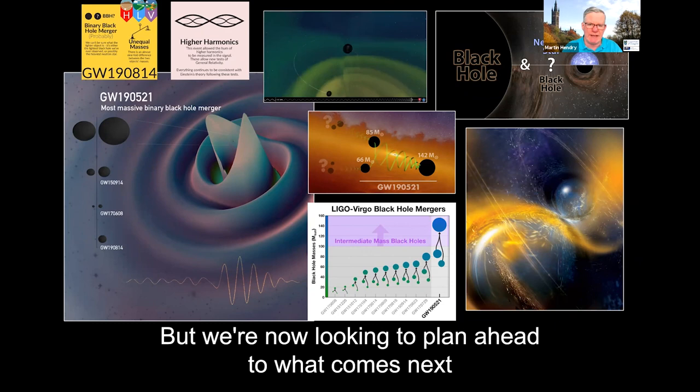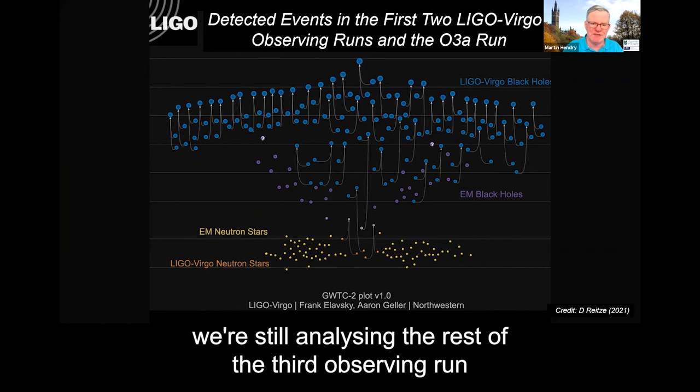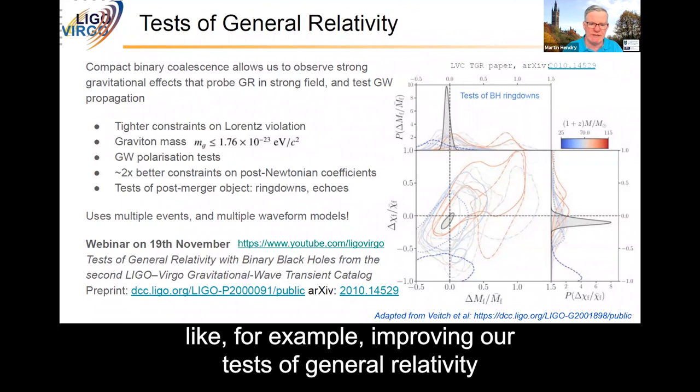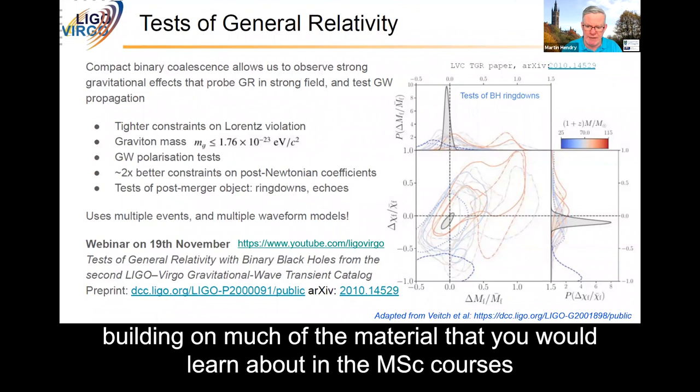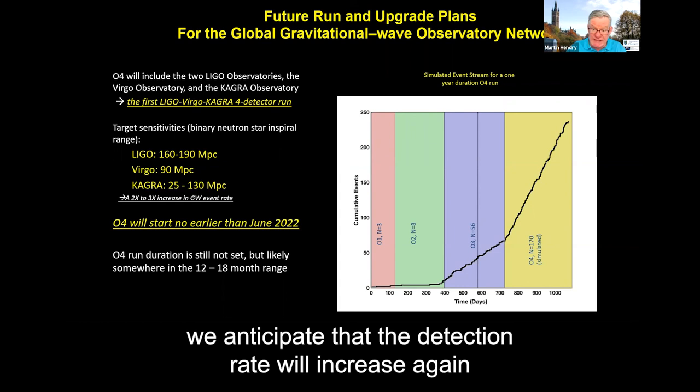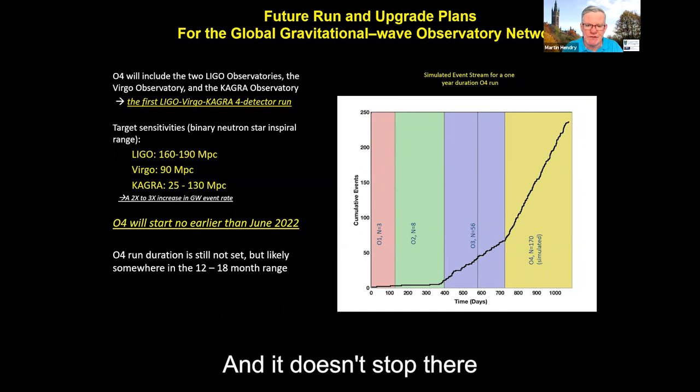But we're now looking to plan ahead to what comes next. We've got our catalog, our updated catalog of 50 gravitational wave events that we've confirmed so far. We're still analyzing the rest of the third observing run, while still learning all that we possibly can from the ones we've published so far, like, for example, improving our tests of general relativity, and holding on much of the material that you would learn about in the MSC courses. And in 2022, when our fourth observing run begins, we anticipate that the detection rate will increase again, because we're upgrading the detectors to make them even more sensitive. So that's where we're headed. We're looking at having a detection every day or two. And it doesn't stop there.